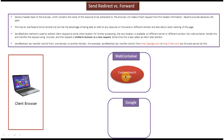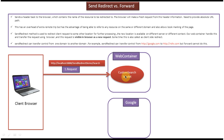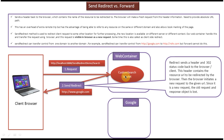In this process the client browser is involved. First, the client browser sends a request to the custom search servlet. The custom search servlet then redirects the request to google.com using the sendRedirect method. The response comes back to the client browser, and because we are using sendRedirect, the response header will contain two things: the status code, which is 302, and the location — the new location, which is google.com. The client browser reads this status code 302 and understands it needs to redirect the request to the new location specified in the location header.